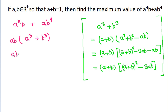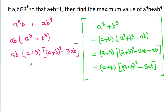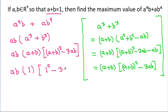So the full expression is ab times (a cubed plus b cubed), which equals ab times (a+b) times [(a+b)² minus 3ab]. Since a plus b equals 1, this simplifies to ab times (1 minus 3ab).